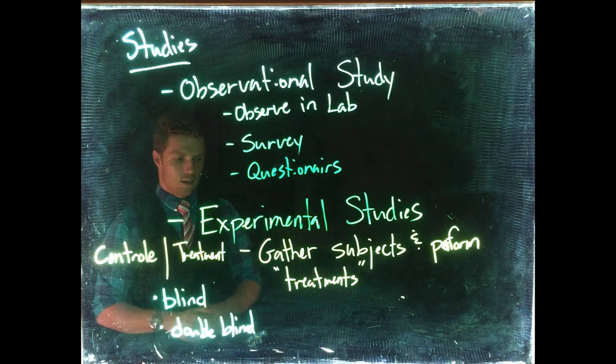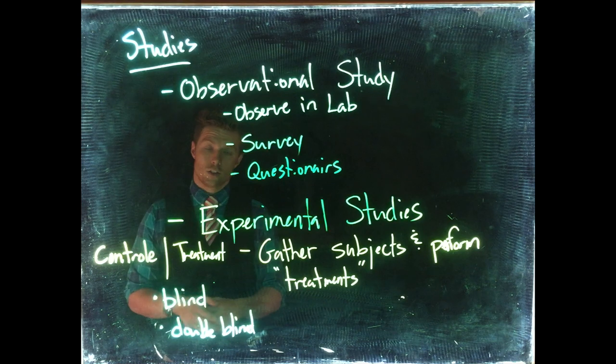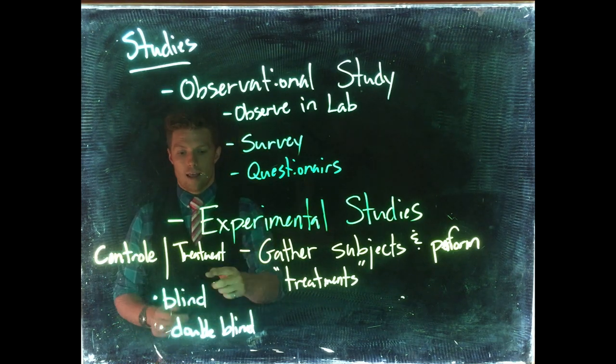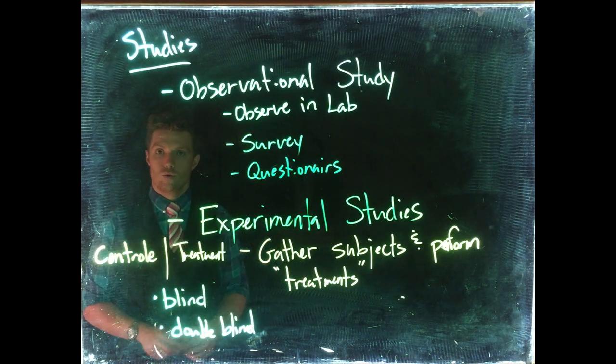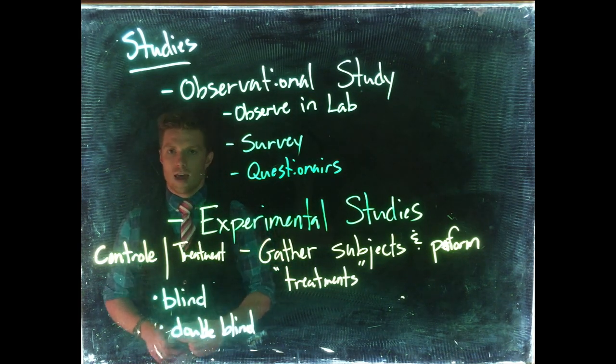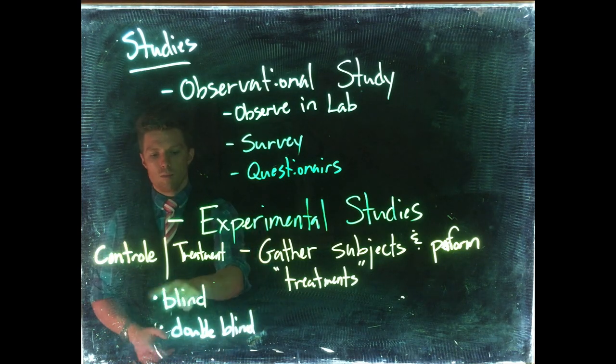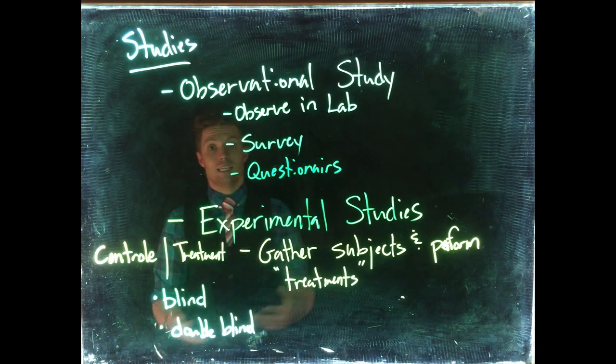The researcher gives them a pill, and they don't know if it's the placebo or the treatment. This helps us remove some of the effects of the placebo effect, because people react differently if they actually know they're in the treatment group. That would be a blind experiment. Now double-blind is even better.